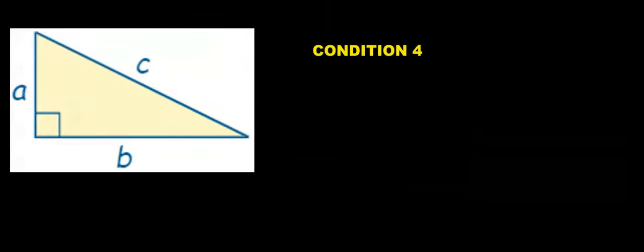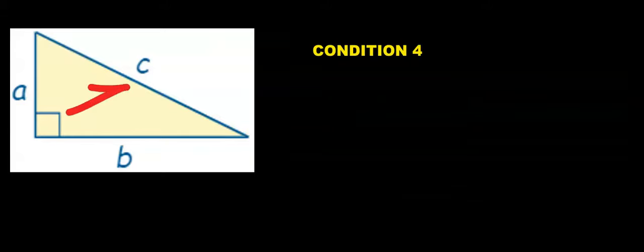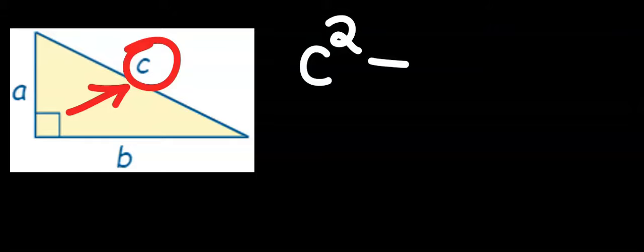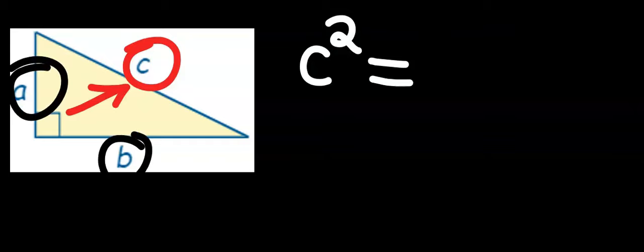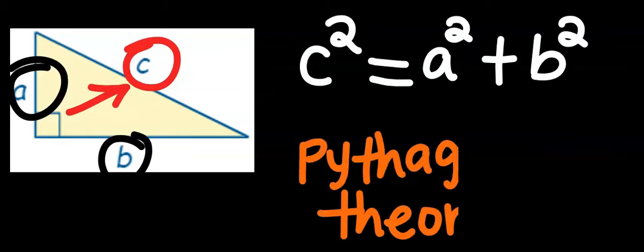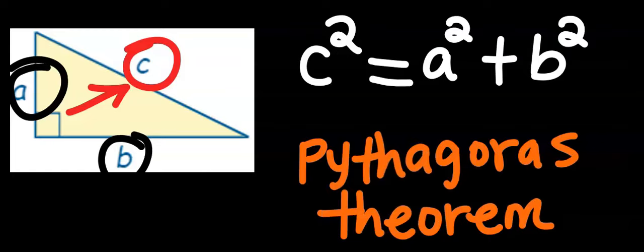Number four: once you have identified the longer side — here it is c — write it out. Next, you are going to square it. Next, put an equal sign. Then take the two remaining sides, square each one, and sum both of them. This is Pythagoras' theorem.